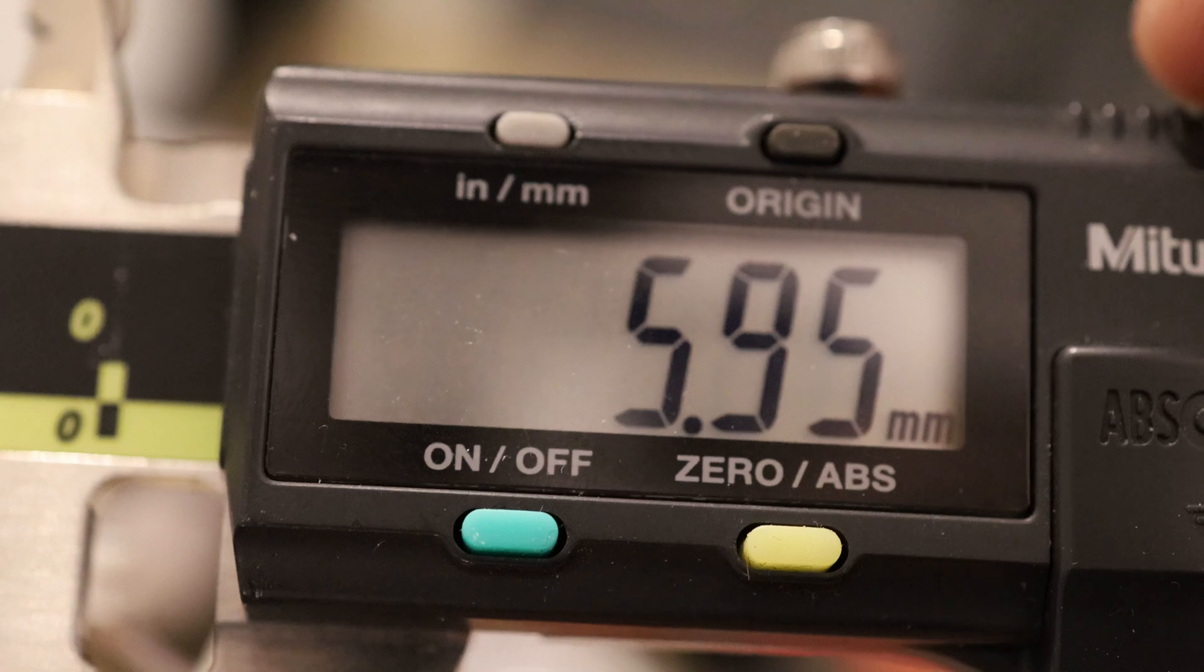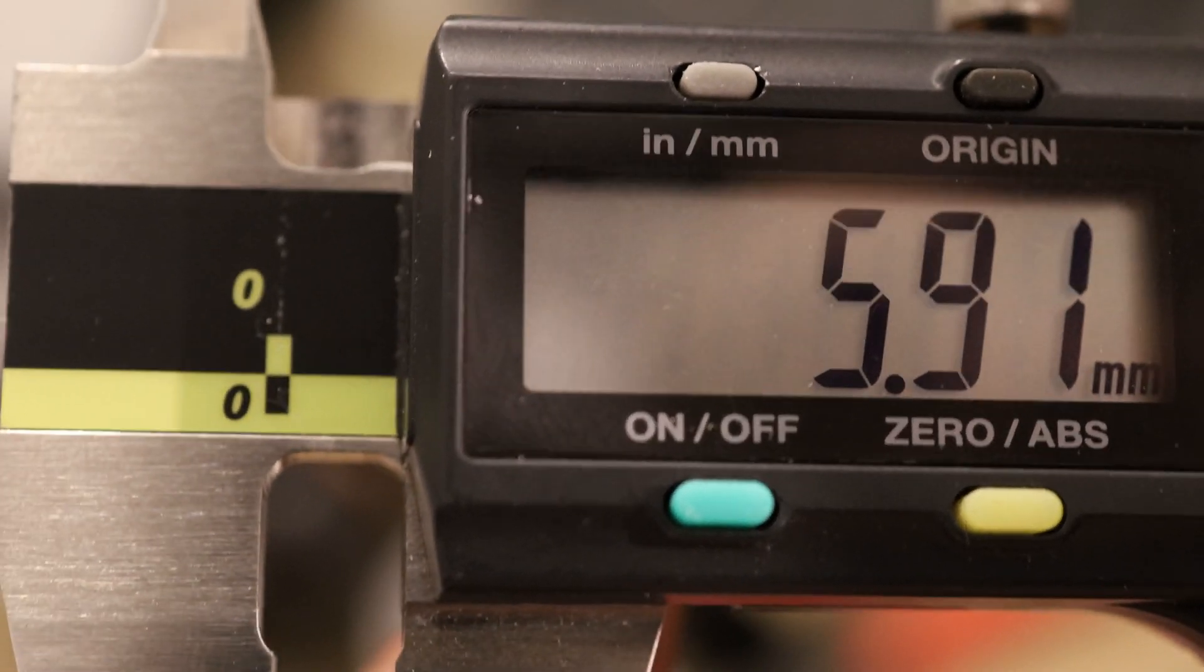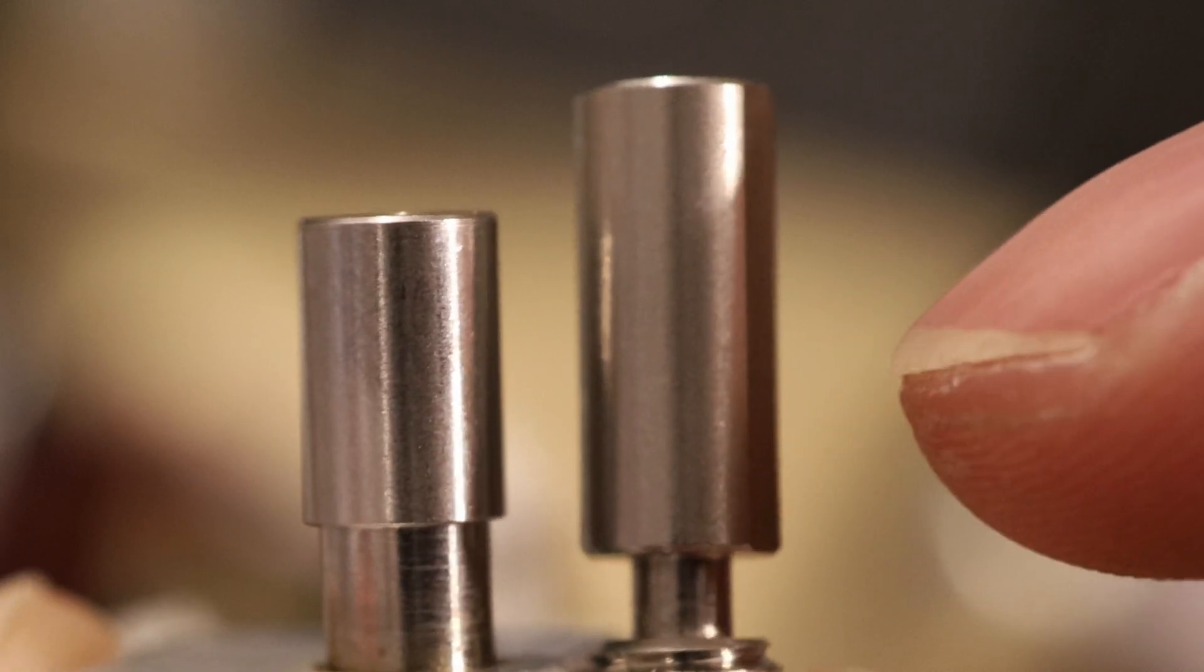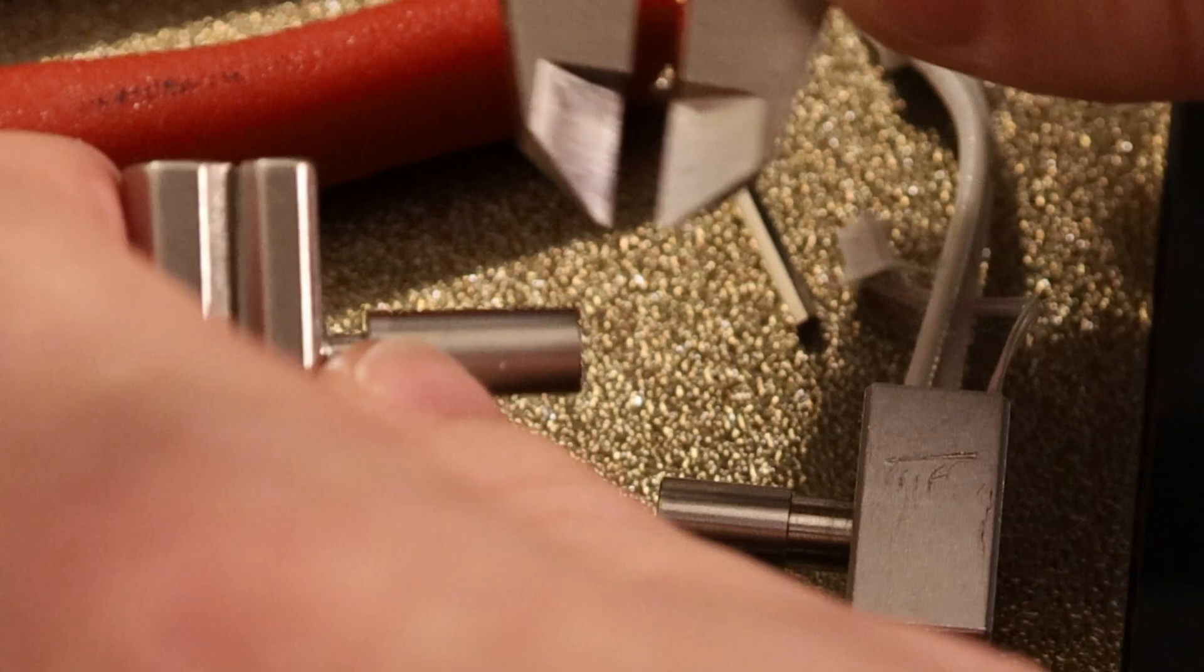The Creality heat brake is 5.95 millimeters. The Bicu H2 heat brake is 5.91 millimeters, so that should be close enough that I can swap these out. I measured a 3.5 millimeter difference in length, so I'm going to shave off 3.5 millimeters.